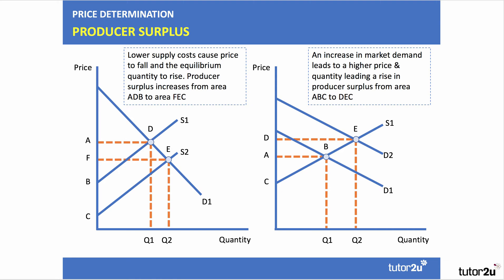Shifts in demand and supply also affect producer surplus. On the left-hand side, we see the effect of lower supply costs — a fall in cost causing market supply to shift out from S1 to S2. You move down the demand curve to a higher quantity consumed Q2. The price comes down from A to F, and producer surplus originally area A, D, B now increases to area F, E, C.